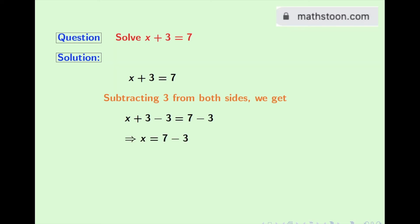And on the right hand side, we have 7 minus 3. So finally, we get x is equal to 4. And this is our final answer.